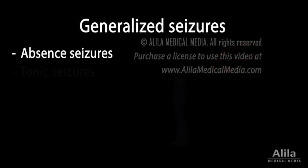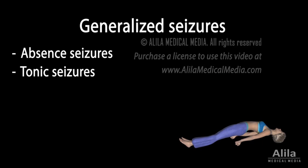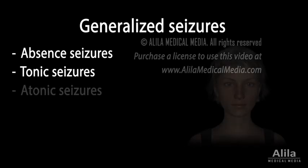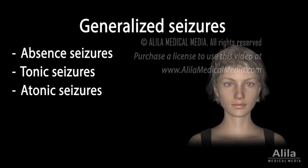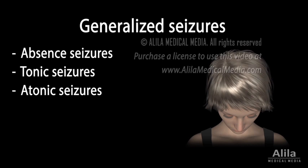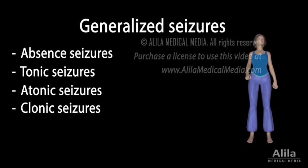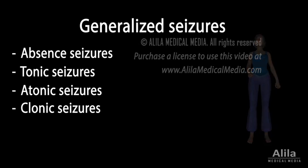Tonic seizures are associated with stiffening of muscles or increased muscle tone and may cause the person to fall, often backwards. Atonic seizures, also known as drop attacks, are characterized by sudden loss of muscle tone, which may cause the person to collapse or drop down. Clonic seizures are associated with rhythmic jerking muscle movements. Most commonly affected are the muscles of the neck, face, arms, and legs.